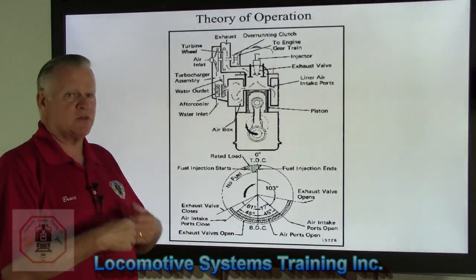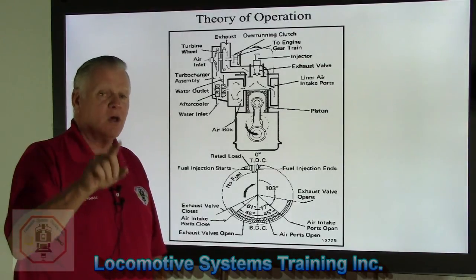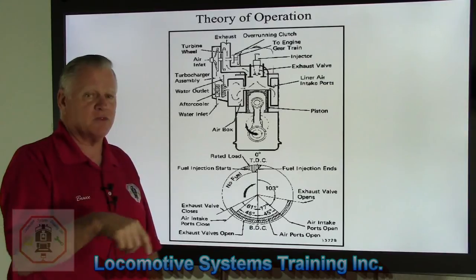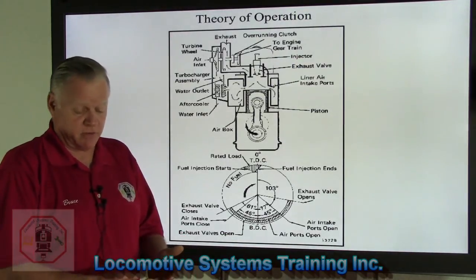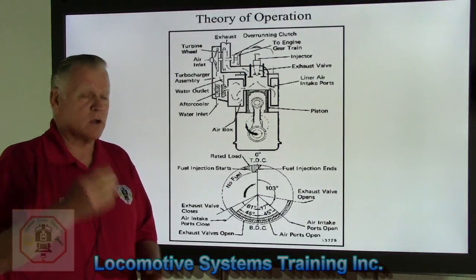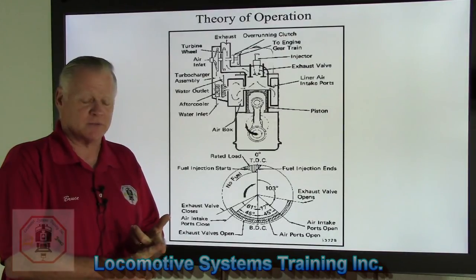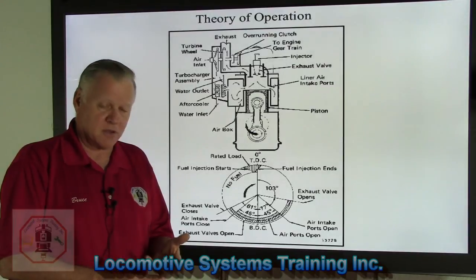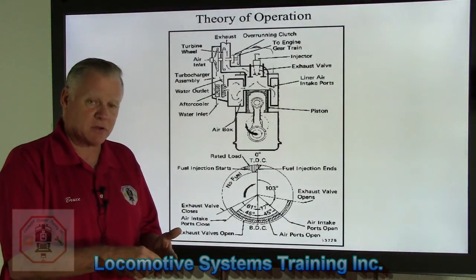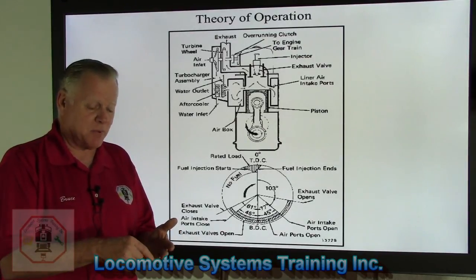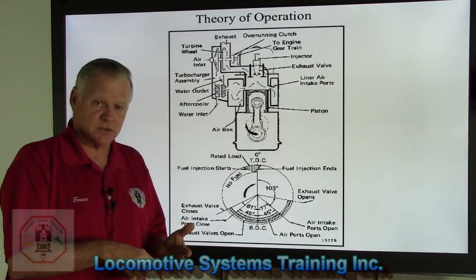Let's talk about what happens during one revolution of this crankshaft. It's a two-stroke engine, so every time the crankshaft makes one revolution, all five elements of the process will occur. A lot of times you'll hear in automotive, railroad, or aviation that there are four items: intake, compression, power, and exhaust. However, we're leaving one thing out — between compression and power, we inject fuel. So it's actually five events: intake, compression, ignition, power, and exhaust.